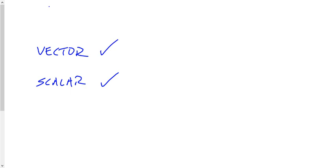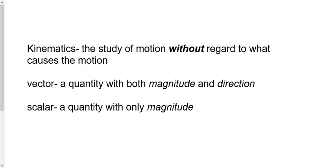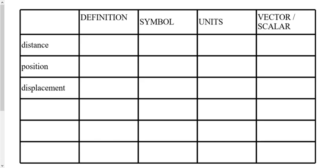Yesterday you learned about three quantities: distance, position, and displacement. Since we're talking about vectors and scalars right now, I want you to tell me which of these three quantities are vectors and which are scalars. Just tell me one of them and tell me whether it's a vector or a scalar.